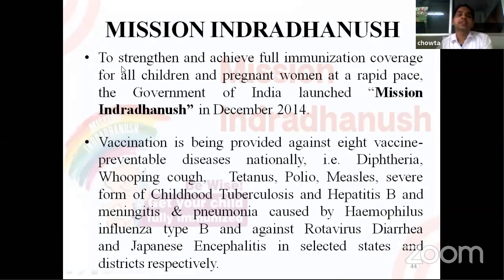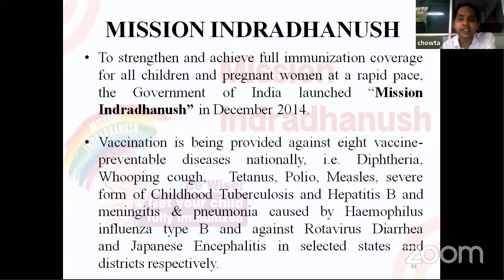Mission Indradhanush was launched by the government of India in December 2014 to strengthen and achieve full immunization coverage for all children and pregnant women at a rapid pace. Vaccination is provided against eight vaccine-preventable diseases nationally: diphtheria, whooping cough, tetanus, polio, measles, severe form of childhood tuberculosis, hepatitis B, and meningitis and pneumonia caused by Haemophilus influenzae type B, and also against rotavirus diarrhea and Japanese encephalitis in selected states and districts.